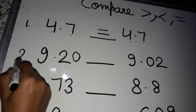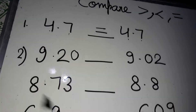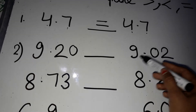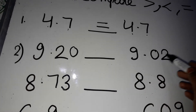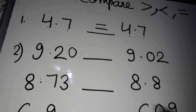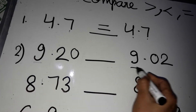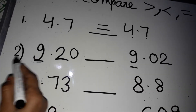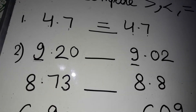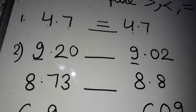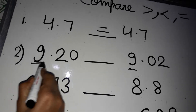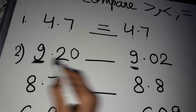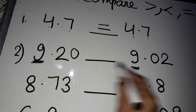Now you have to compare the second example: 9.20 and 9.02. First, you have to compare the whole number, that is 9. The left side of the decimal you have to compare first — this is the whole part. So they are both the same.